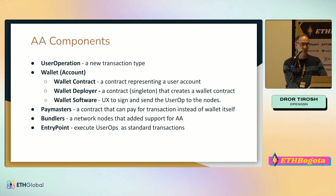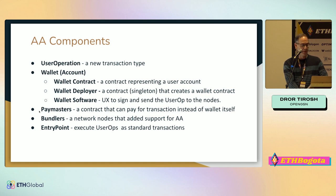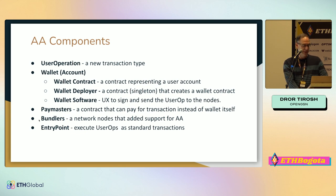And there's the wallet software — the UX — like a browser extension or other software that shows the transaction to the end user and lets them sign it. It has to know the contract signature to sign using the right scheme. The next components are the Paymaster contracts that can pay for transactions if they want — they verify transactions and decide whether the transaction is valid for their payment system. Bundlers are the nodes that support account abstraction and put user operations on-chain. And the entry point is the one contract we deliver that executes on-chain transactions, performs all validation, and orchestrates the entire system.